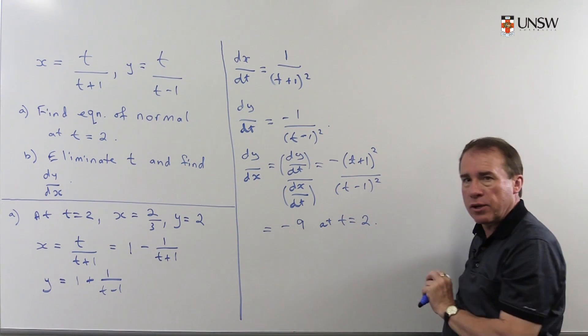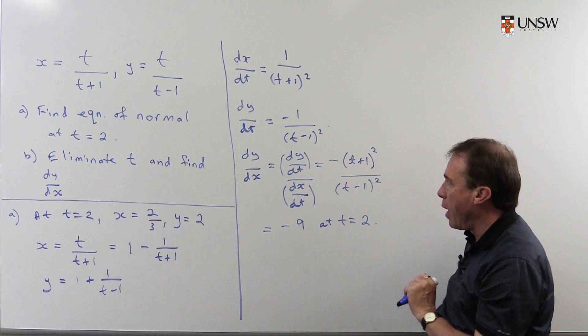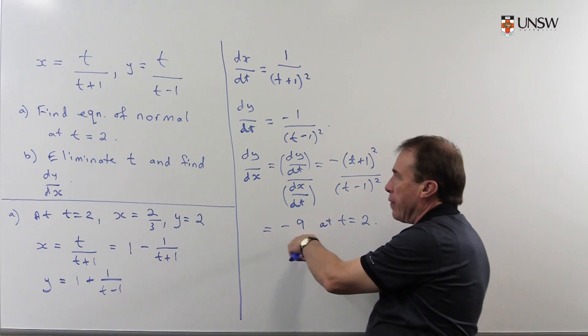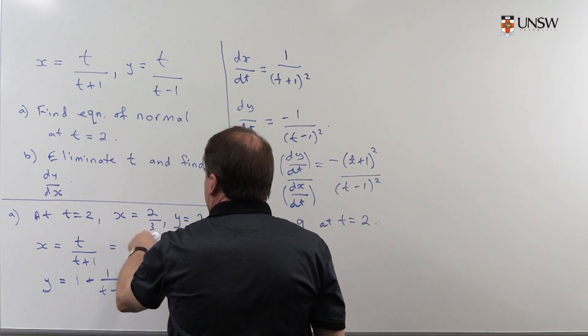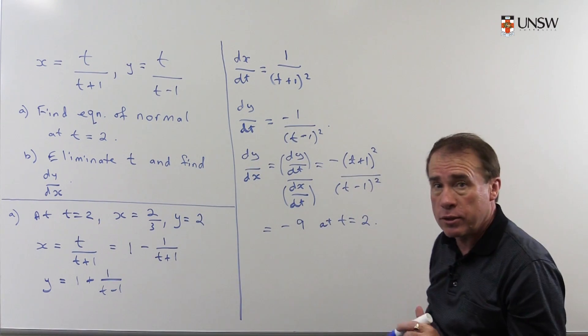Don't forget to write some English in. Just explain what you're doing. And that gives me the gradient then of the tangent to this curve at t equals 2. That is at this point when x is 2/3 and y is 2.